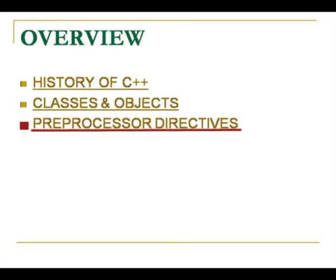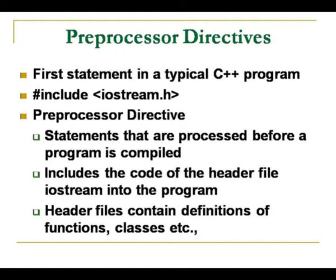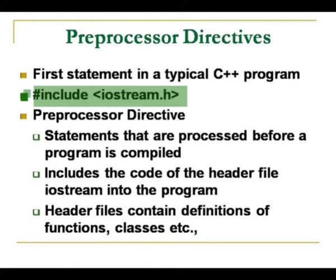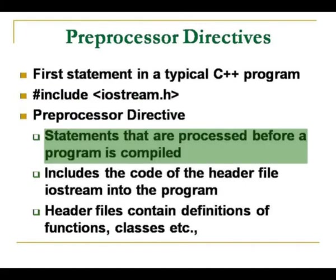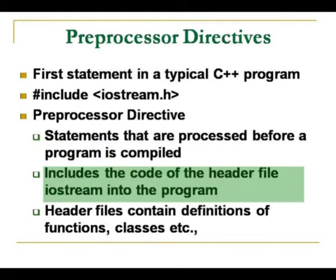That is the use of classes and objects and the way to program using C++. Finally, we move to preprocessor directives, which we have already seen in C. This is the first statement in a C++ program — the including of header files. In C it was stdio.h; here it is iostream.h, the input-output-stream header. Preprocessor directives are statements that are processed before a program is compiled. They include the code of the header file into our program.